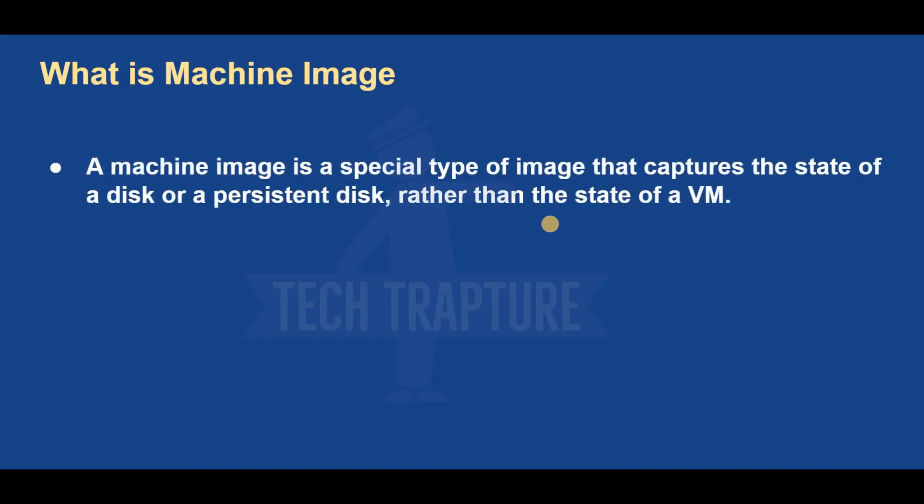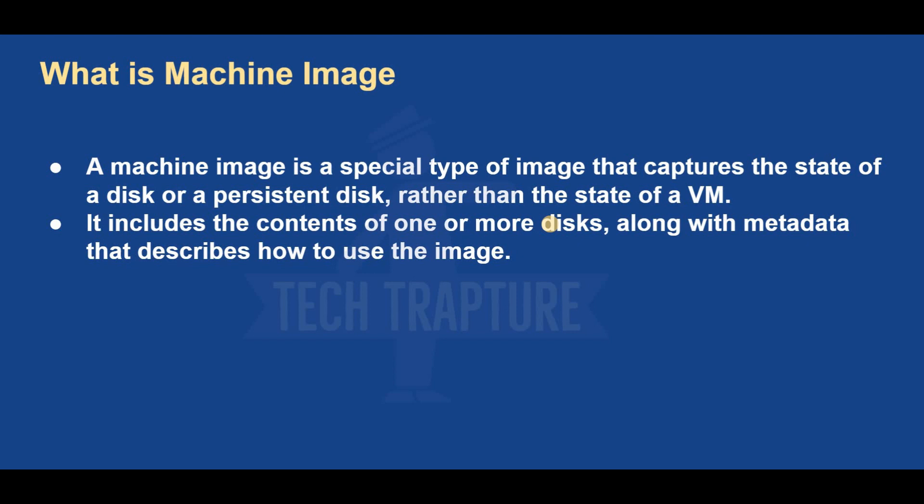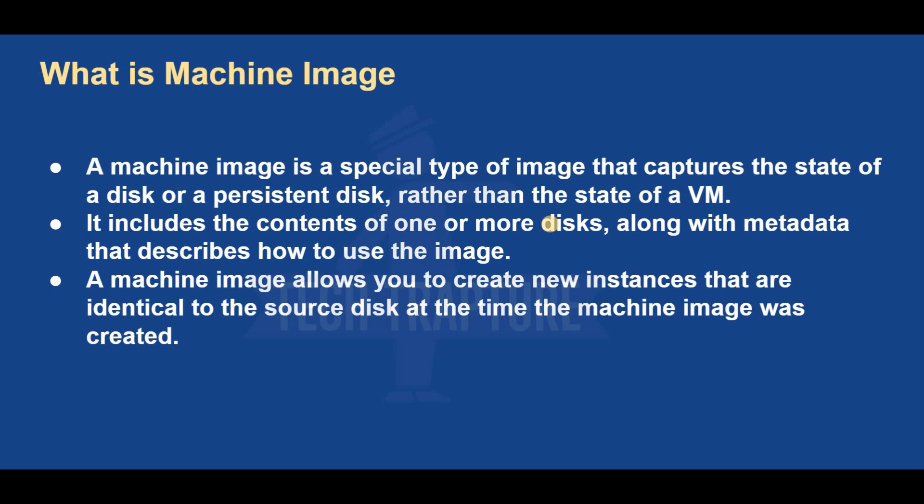Now what is a machine image? A machine image is a special type of image that captures the state of a disk or persistent disk. It includes the contents of one or more disks along with metadata. In simple words, a machine image is a backup of your VM. If your VM has three disks attached and you want to take a backup, a machine image will store all VM metadata as well as all the data in all disks.